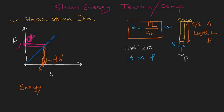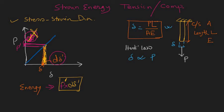The energy due to this increment dP is P-dashed times the increment in deflection d(delta-dashed). This energy is represented by the hatched area. If you simply remove dP, the d(delta-dashed) is also removed and the energy is released. The material acts just like a spring — storing energy when load is applied and releasing it when removed.